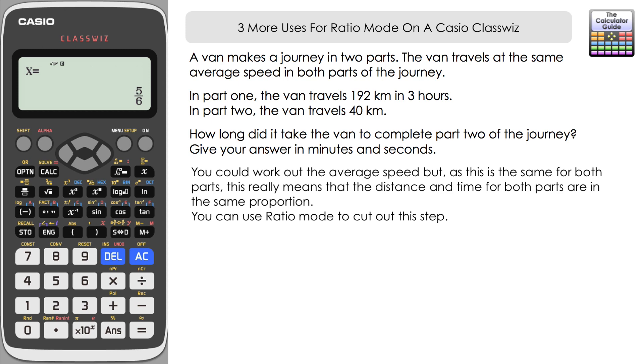In that way, we can use ratio mode to quickly get our answer. Essentially, we're cutting out having to work out the average speed, because we know it's the same in both parts. So with the same proportion, let's use ratio mode.